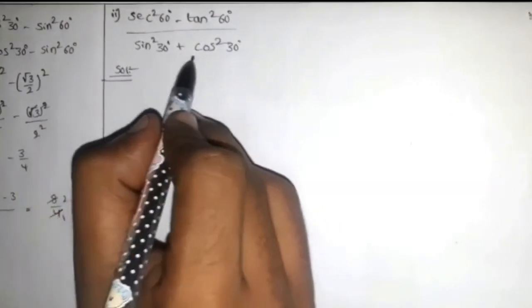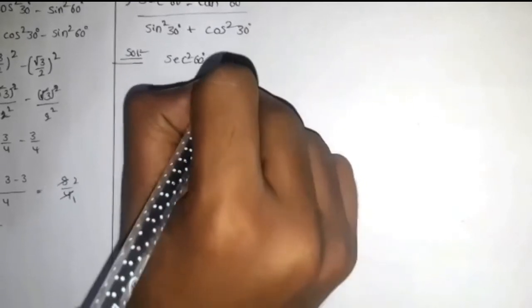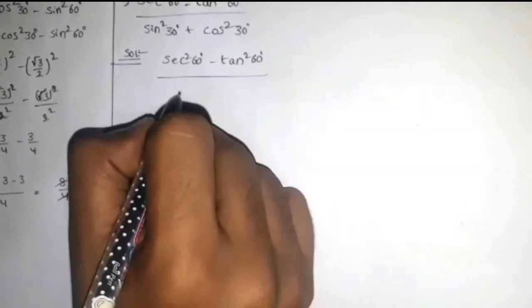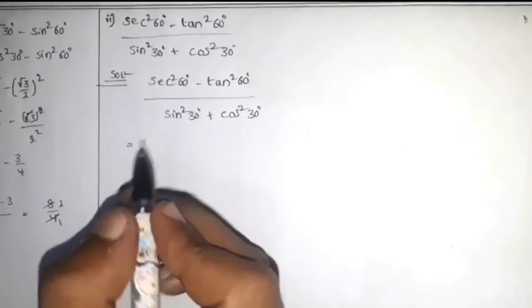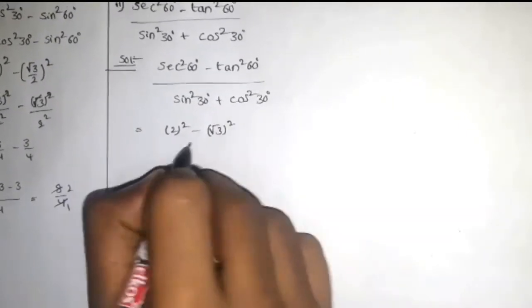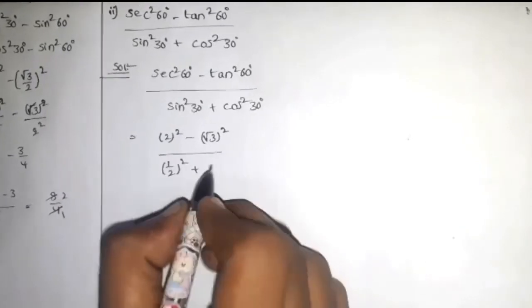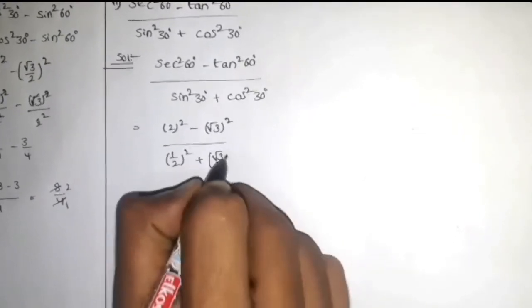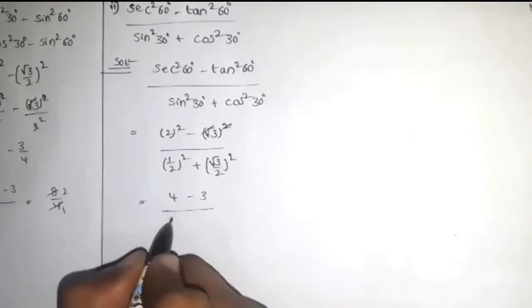Let us solve another example: evaluate sec² 60° minus tan² 60° over sin² 30° plus cos² 30°. The value of sec 60° is 2, so sec² 60° equals 4. Tan 60° equals √3, so tan² 60° equals 3. Sin 30° equals 1/2, so sin² 30° equals 1/4. Cos 30° equals √3/2, so cos² 30° equals 3/4.